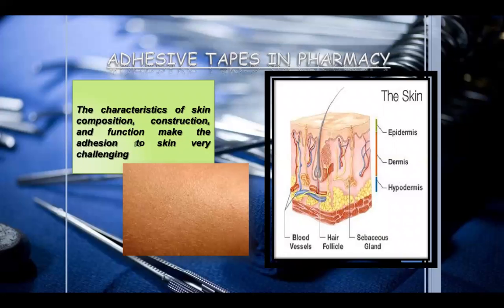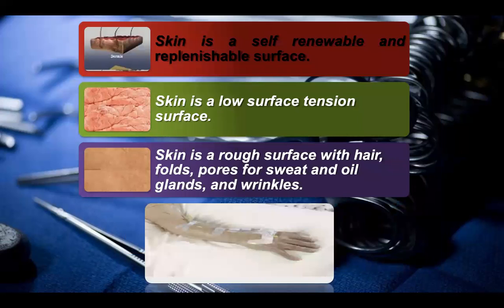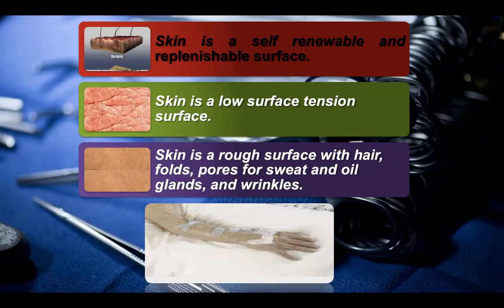Adhesive tapes in pharmacy — the history of skin composition, construction, and functions makes adhesion to skin very challenging. Skin is a self-renewable and replenishable surface, so it can recover accordingly. Skin has a low surface tension in certain areas, and is a rough surface with hair, pores, sweat and oil glands, and wrinkles. You must select the tape according to the nature of the skin.